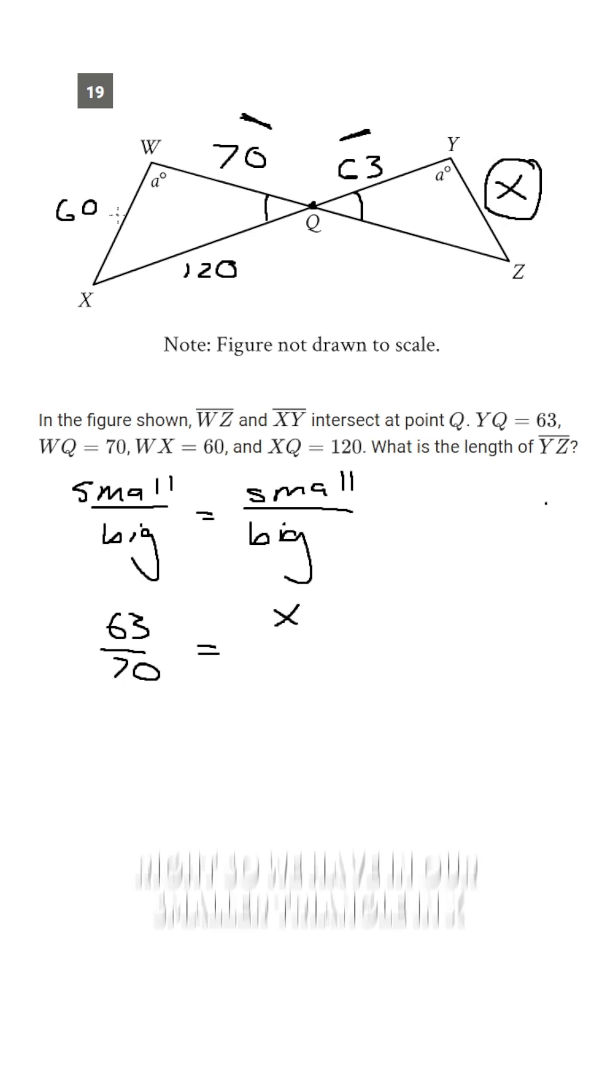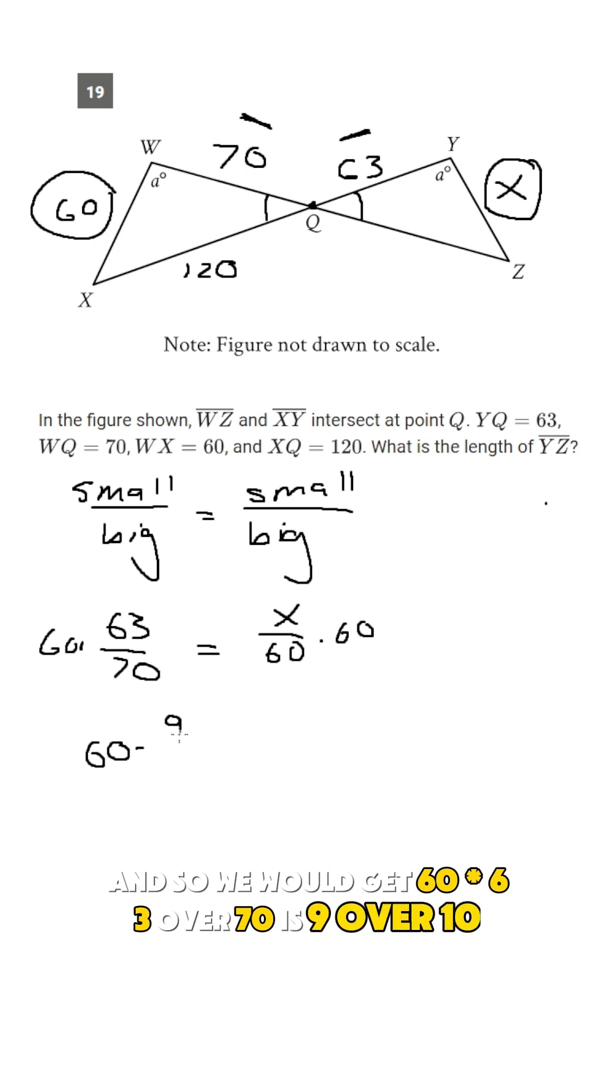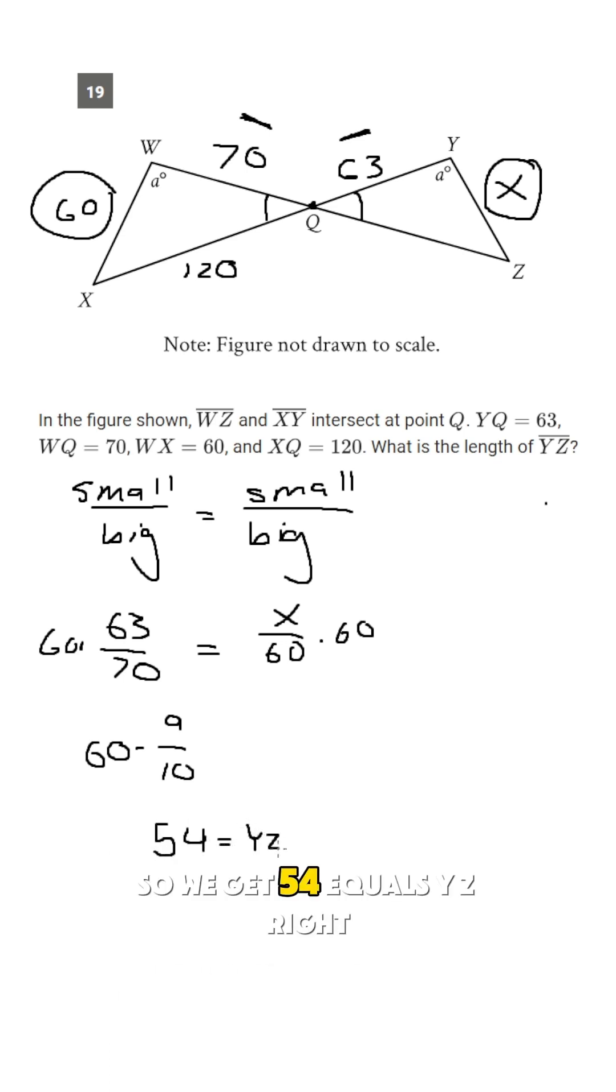So then all we have to do is multiply both sides by 60, and so we would get 60 times 63 over 70, which is 9 over 10. So 60 times 9 over 10 is going to be 54. Right, so we'd get 54 equals YZ.